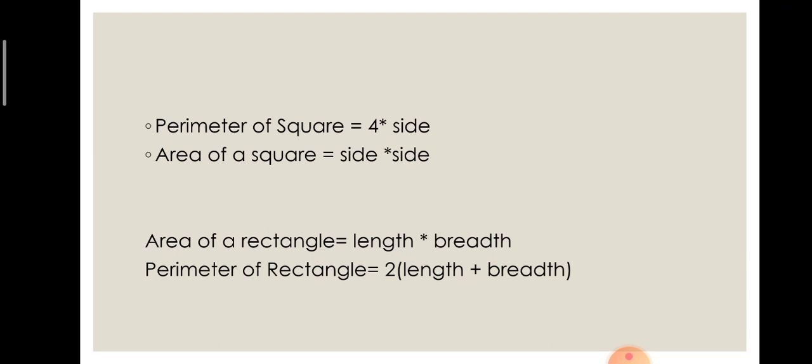Area of rectangle: ab rectangle me kya hote hai, length and breadth different hote hai. So area of rectangle equal to length multiply by breadth. Perimeter of rectangle equal to 2 into length plus breadth.